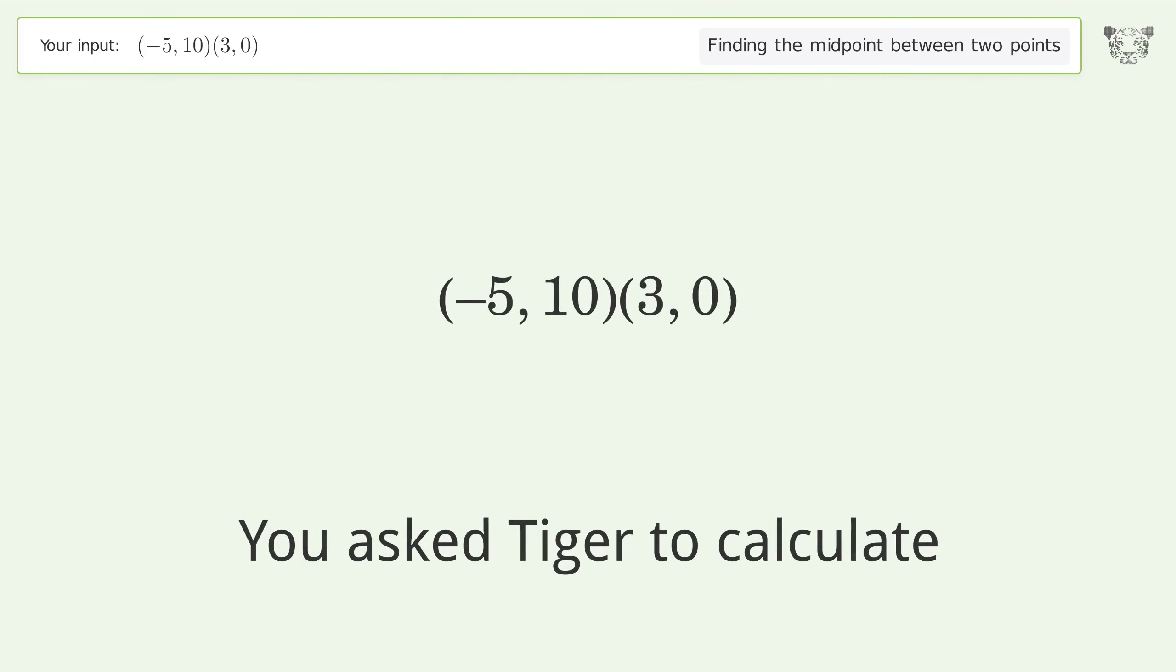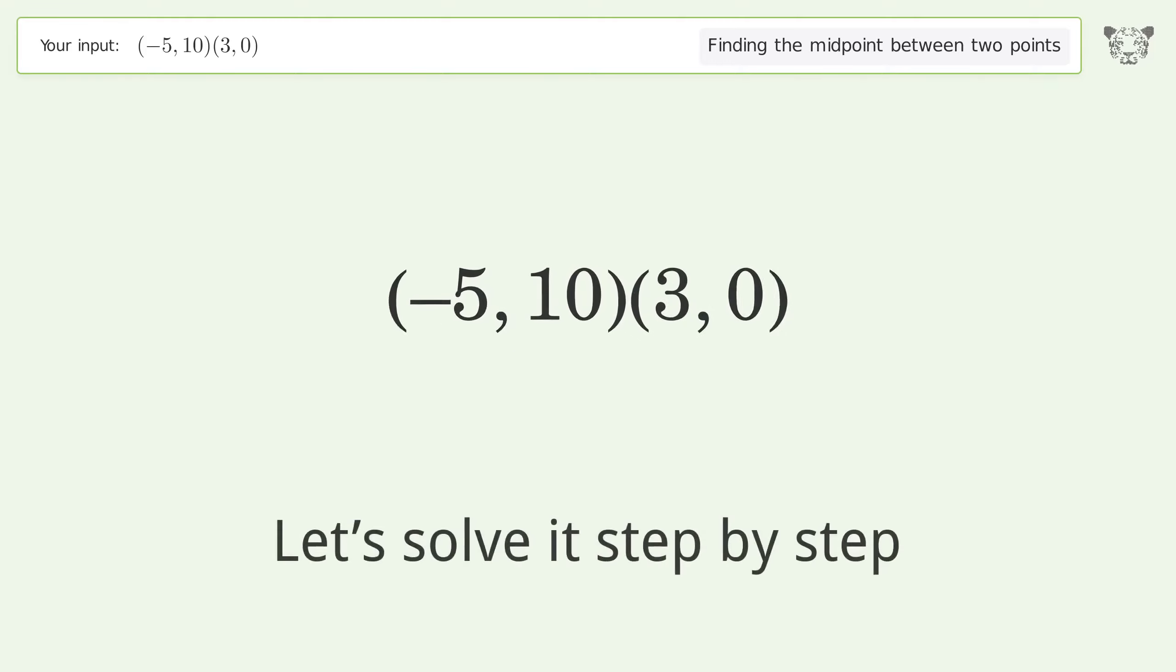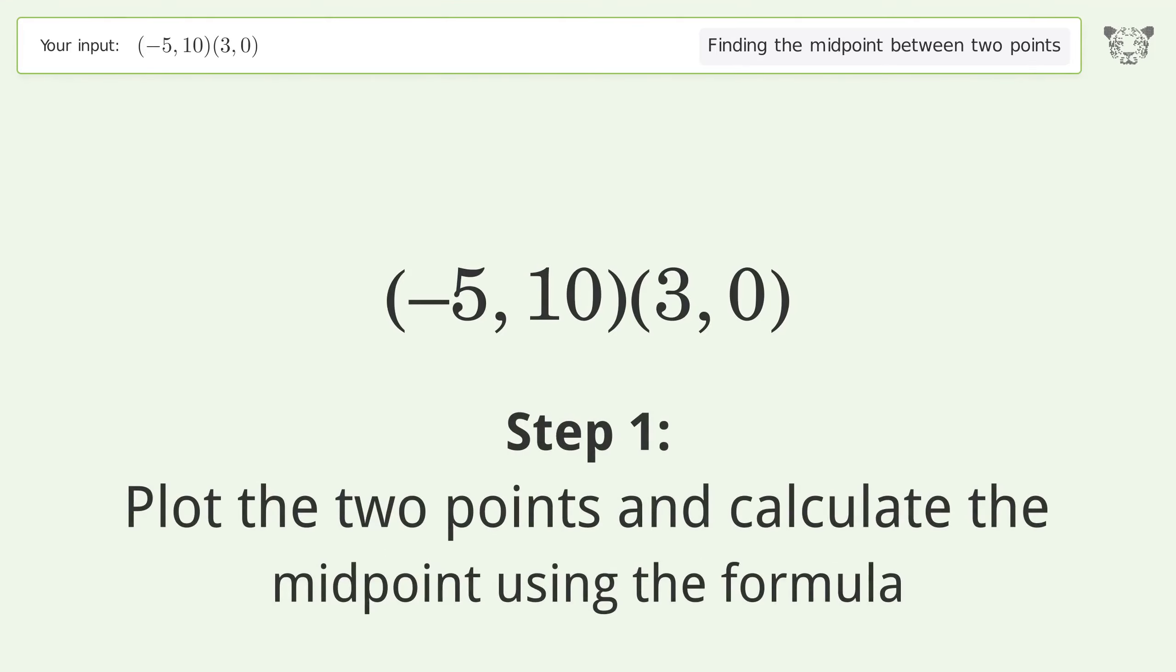You asked Tiger to calculate this. This deals with finding the midpoint between two points. The midpoint between the two points is negative one comma five. Let's solve it step by step. Plot the two points and calculate the midpoint using the formula.